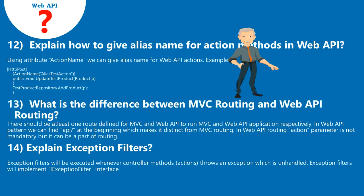Question 13: What is the difference between MVC routing and Web API routing? There should be at least one route defined for both MVC and Web API to run their respective applications. In the Web API pattern, we can find 'API/' at the beginning, which makes it distinct from MVC routing. In Web API routing, the action parameter is not mandatory but it can be part of the routing.